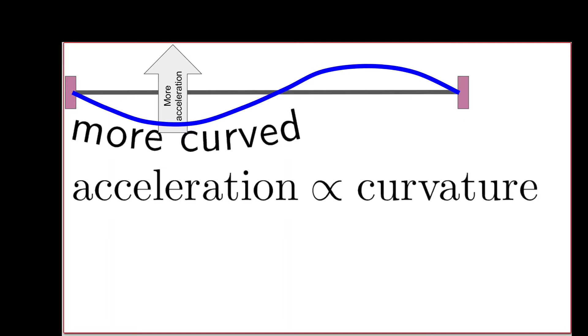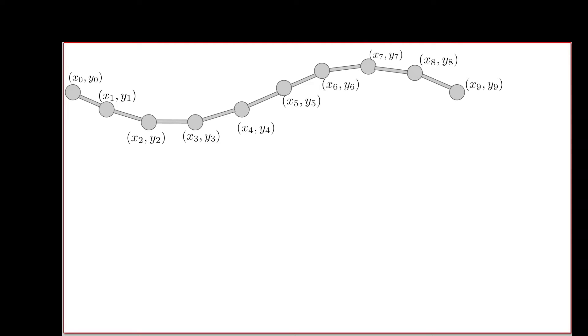In words we say that acceleration is proportional to curvature, and this symbol that looks like a broken infinity just means proportional to. We can simplify things and break this string into a series of particles. Let's break this string into 10 particles and imagine that they are connected by massless connectors that carry tension between them. We can label the positions x0, y0 to x9, y9. Now I'd like to pick just one of those particles to study in more detail.